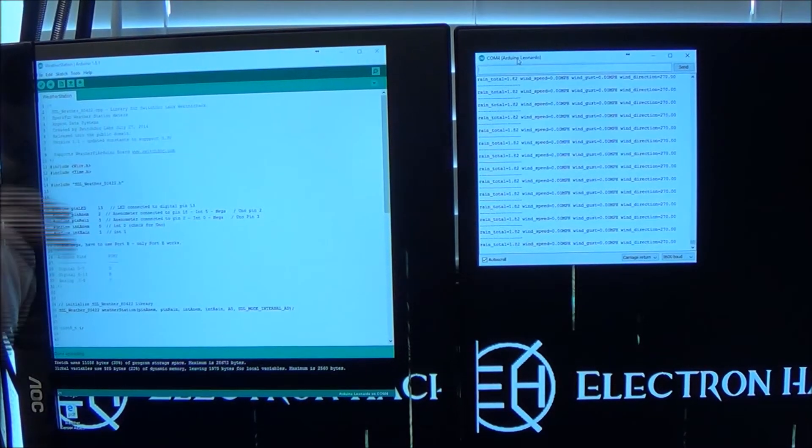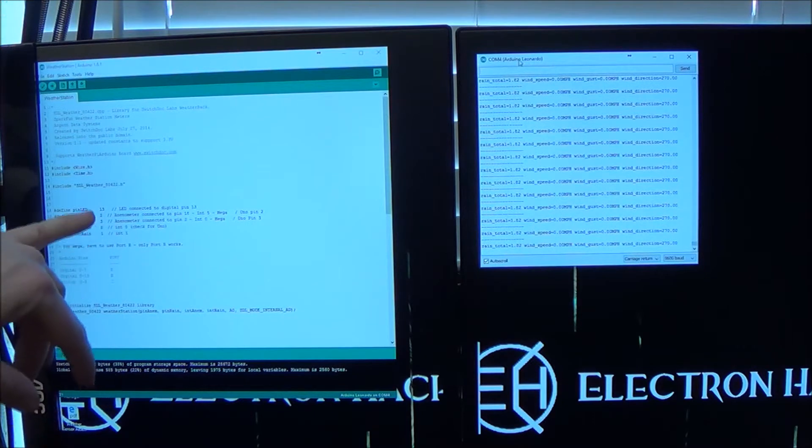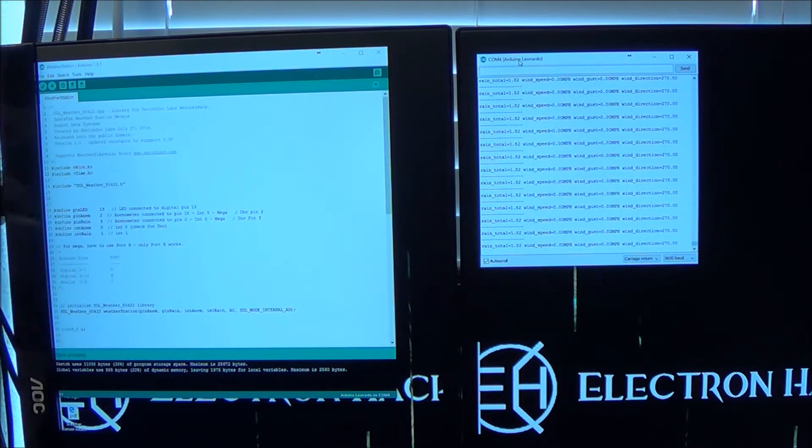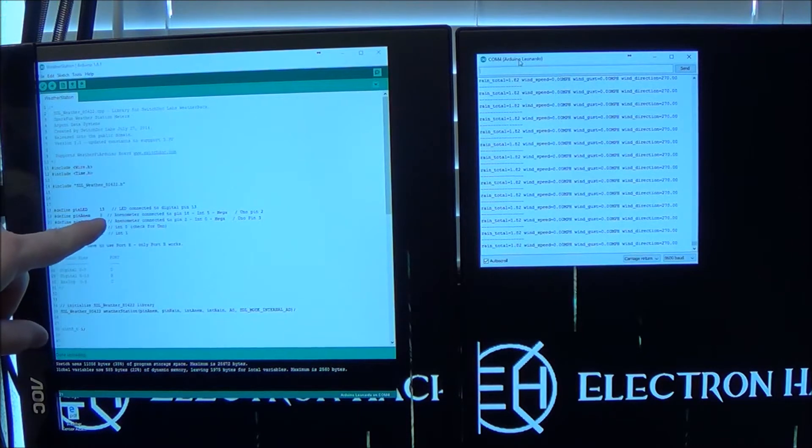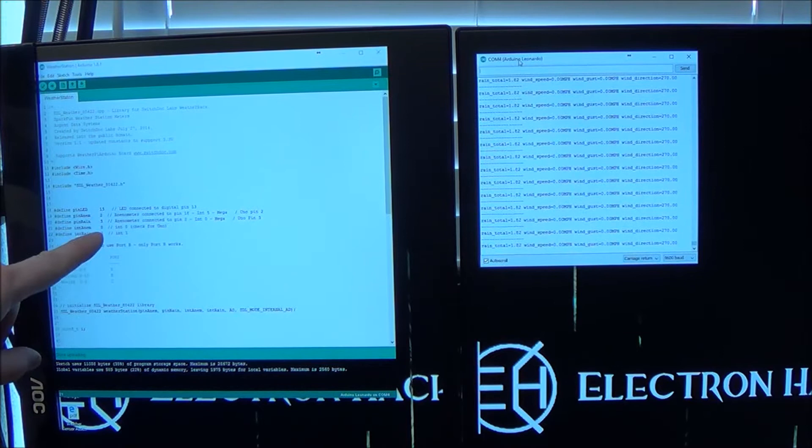There's a simple Arduino library you can download. This one's called SDL Weather 80422. The pins came set up for Omega, so note how I changed. The anemometer is on 2, rain is 3. The wind speed is on analog 0.